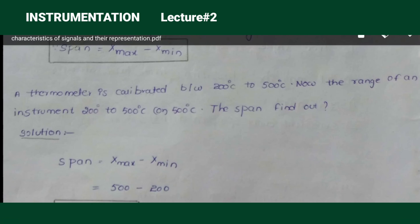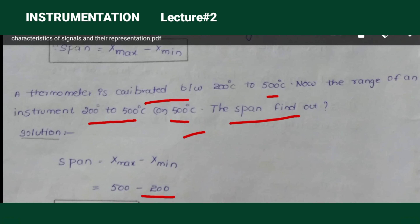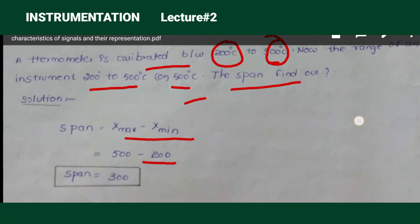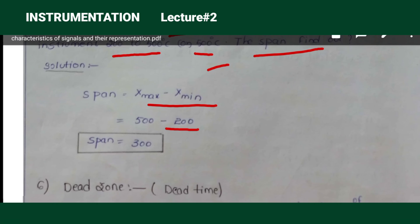In the last video we discussed about scale range and scale span. For example, a thermometer is calibrated between 200 degrees to 500 degrees centigrade. The range of the instrument is 200 to 500 degrees. The scale span is given by x_max minus x_min, which equals 300 degrees centigrade.